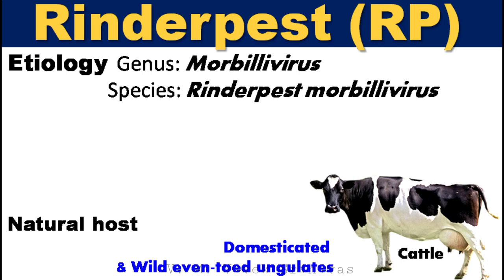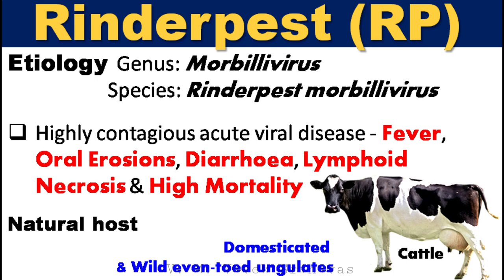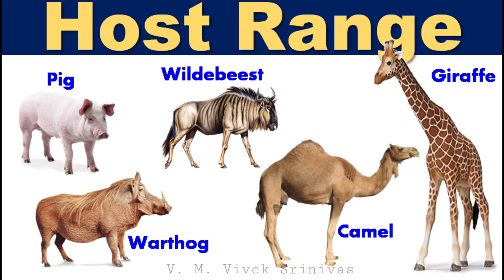This is a highly contagious, acute viral disease characterized by fever, oral erosions, diarrhea, lymphoid necrosis, and high mortality in domesticated and wild even-toed ungulates such as cattle, buffaloes, yak, sheep, goat, pig, warthog, wildebeest, camel, giraffe, eland, kudu, antelope, and deer.